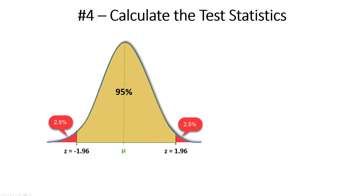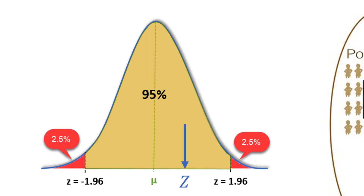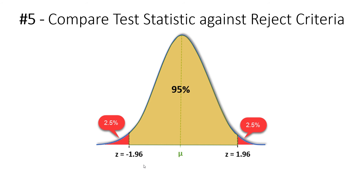Step four: calculating the test statistic. In any hypothesis test, we collect sample data and calculate a sample mean value (x-bar). We then transform that x-bar value into a z-score by comparing it against the mean, dividing by the standard error, and calculating a z-score. We can then take that z-score and compare it against our rejection region, which is step five.